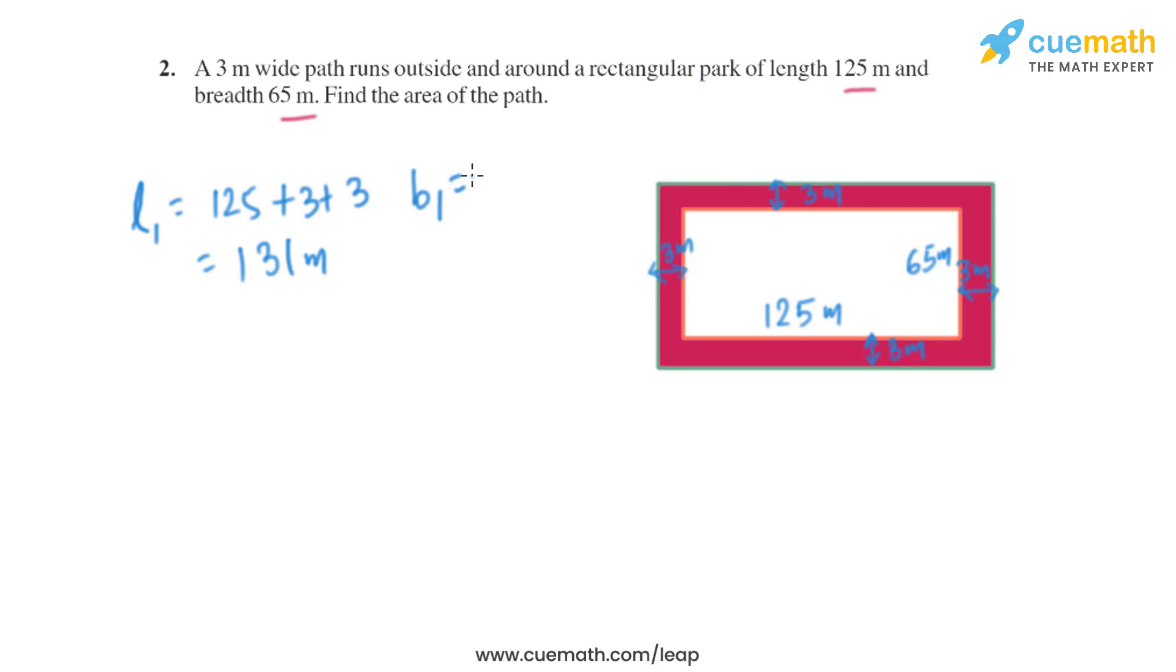Let's find the breadth of the bigger rectangle, that is 65 plus 3 plus 3, so it's basically 65 plus 6 which is same as 71 meter. So that is the length and the breadth of the outer rectangle or bigger rectangle.